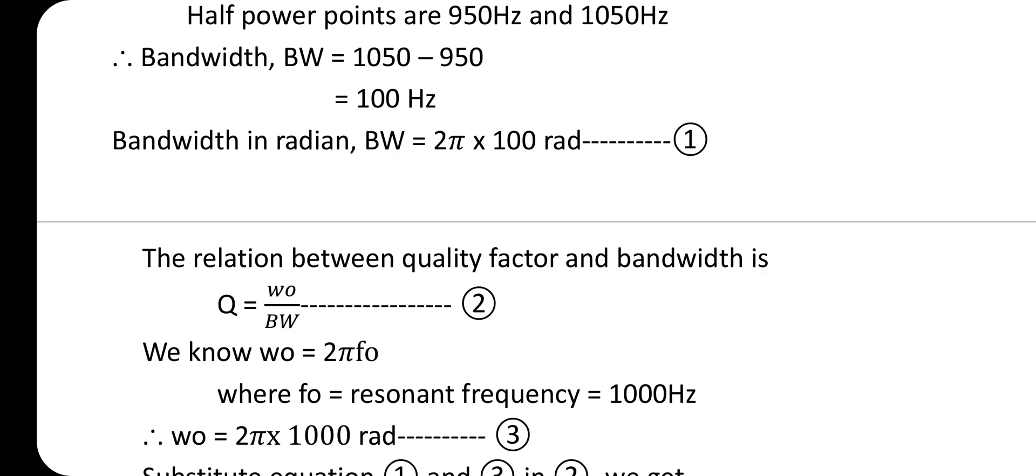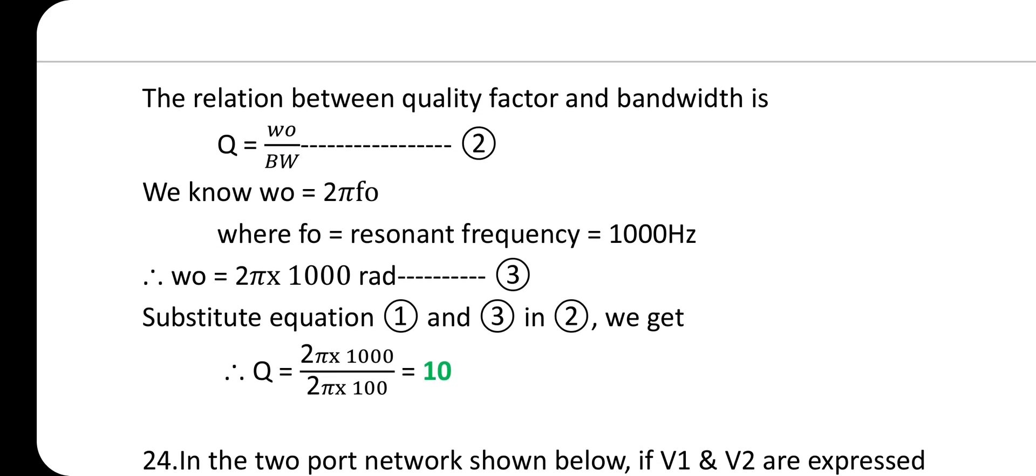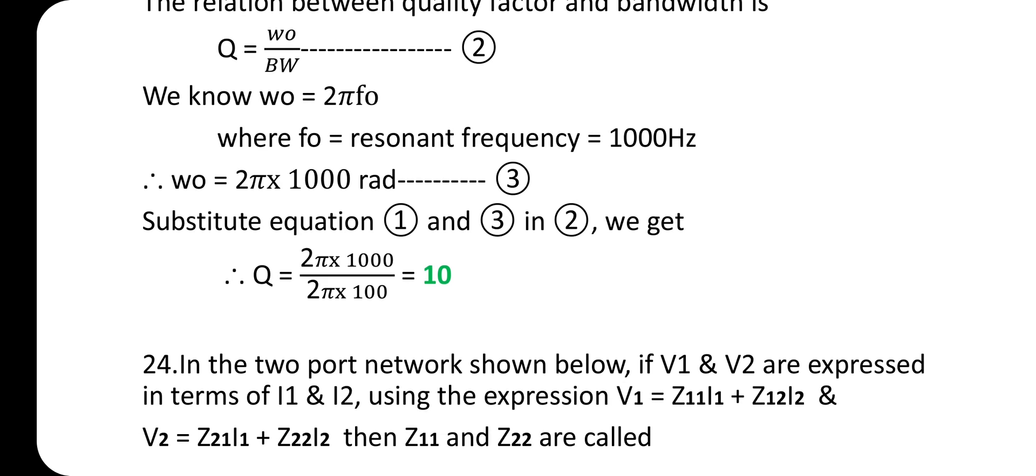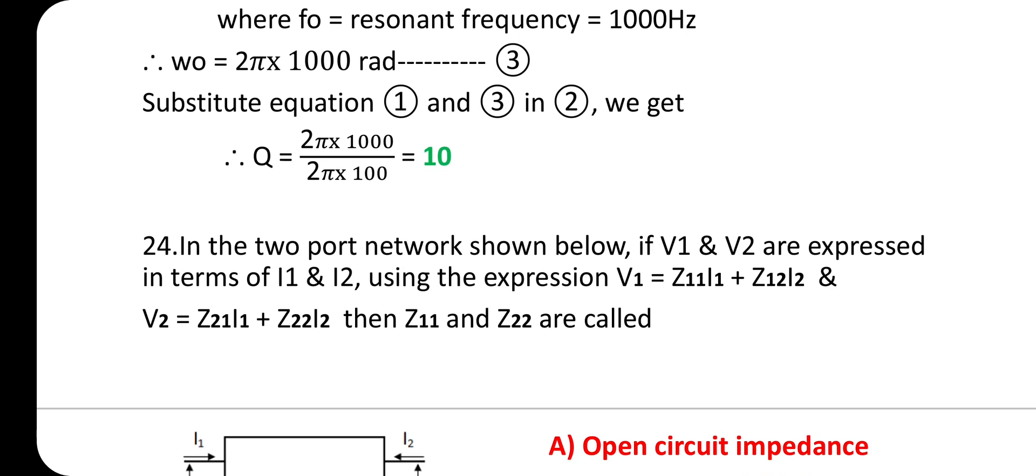Bandwidth in radians equals 2π × bandwidth. The relation between quality factor and bandwidth is Q = ω₀/BW. We know ω₀ = 2πf₀, where f₀ is the resonant frequency equal to 1000 Hz. Therefore ω₀ = 2π × 1000 radians. Substituting, we get Q = 10.